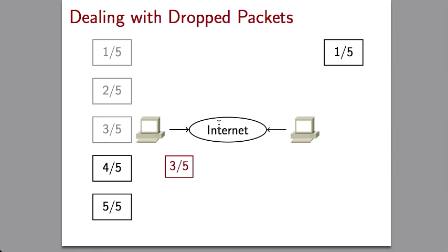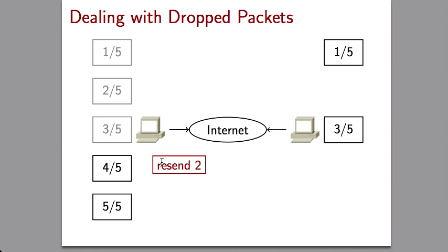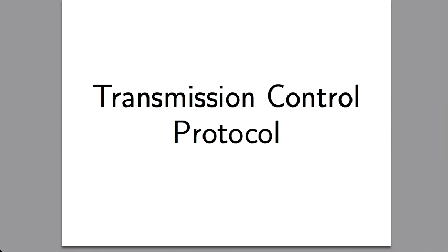You send the third packet and that one goes through, so the other computer gets packet number three. It realizes: 'I got number one and number three — I didn't get number two.' So it creates a new packet saying 'resend two' and sends that back to you. You get that packet, realize you need to resend packet number two, and send it again. That is what we call the Transmission Control Protocol, or TCP.